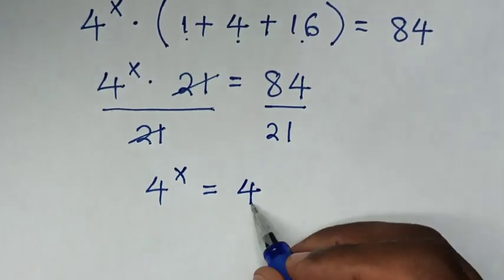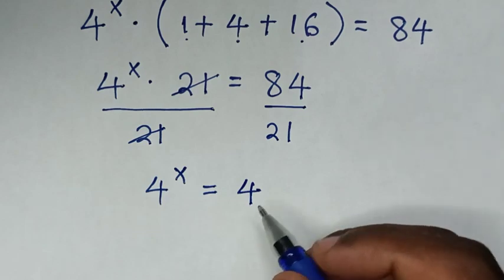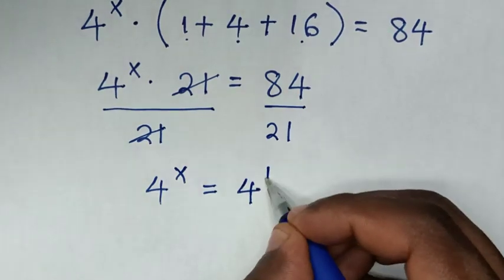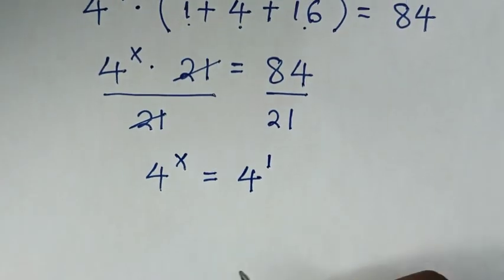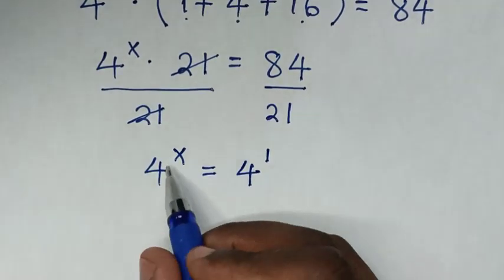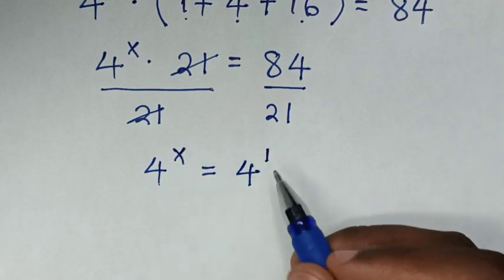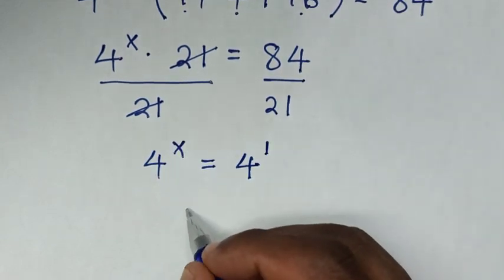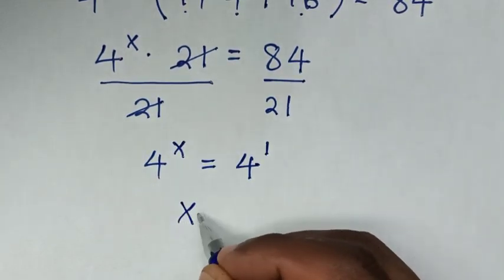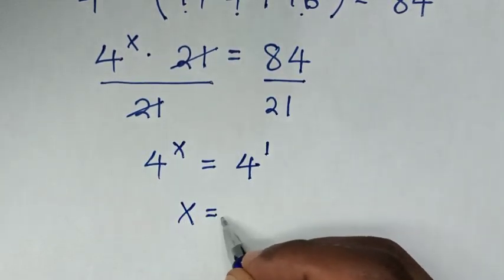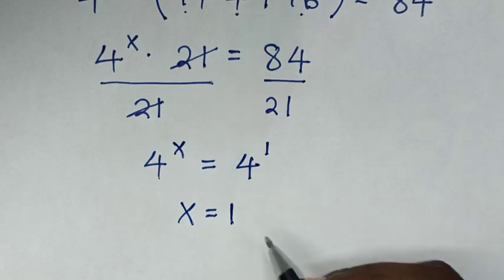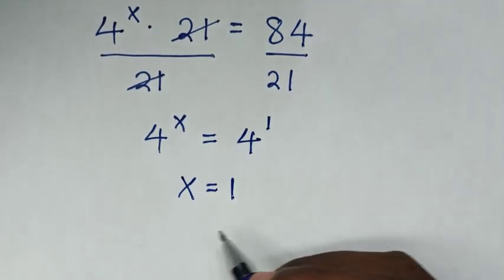Then this 4 is the same as 4 power 1. Now, because they have the same base of 4, we compare the powers. Then it will be x is equal to 1.